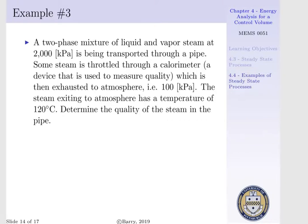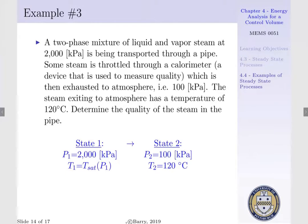To begin, we are going to write our state variables. At state 1, we have a pressure of 2,000 kPa. Since we have a mixture of liquid and vapor within our pipe, our temperature at state 1 is equal to our saturation temperature of our pressure at state 1. That is 212.42 degrees centigrade. At state 2, we have a pressure of 100 kPa, a temperature of 120 degrees centigrade, which puts us into our superheated vapor region.